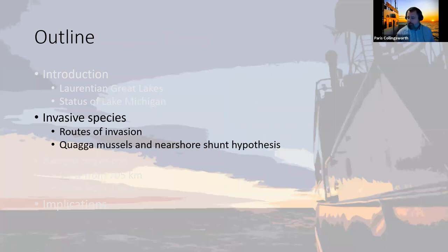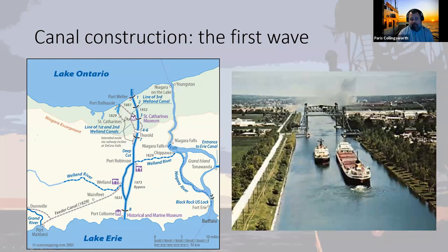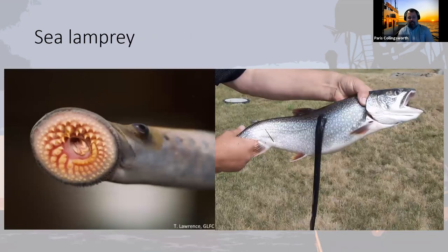The first wave of invasive species came with the construction of canals. This is the Welland Canal — essentially bypassing the Niagara River and Niagara Falls, a series of channeled canals that allow big ships to come from Lake Ontario into Lake Erie. The problem is that ships aren't the only thing that can come through these canals. One of the first issues after canal construction was the invasion of sea lamprey.